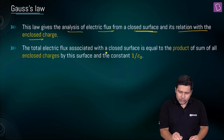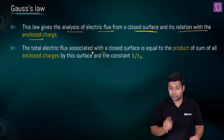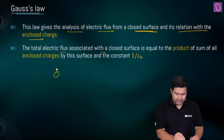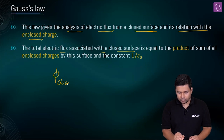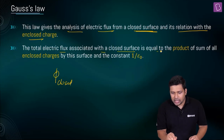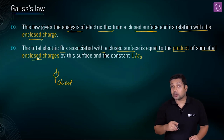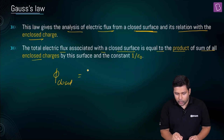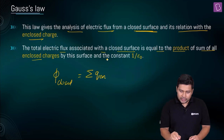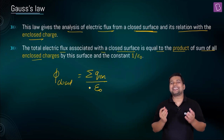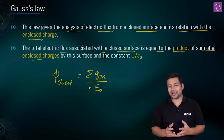What does this law say? The total electric flux associated with a closed surface is equal to the product of the sum of all the enclosed charges times one by epsilon-naught. This constant — this is simply put forward — that is Gauss's Law.